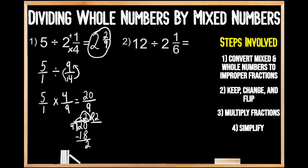Now let's move on to question number two, where we're being asked to divide the whole number 12 by the mixed number two and one-sixth. Remembering our first step, we convert our whole number into a fraction — numerator 12, denominator one. Then we convert our mixed number: we multiply the denominator six by the whole number two to get 12, then add the remaining numerator of one. 12 plus one gives us 13, for thirteen-sixths.